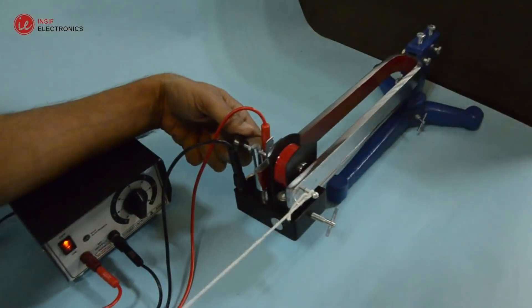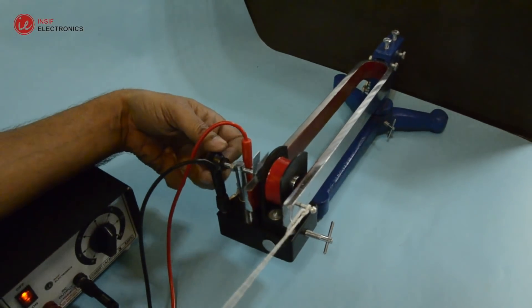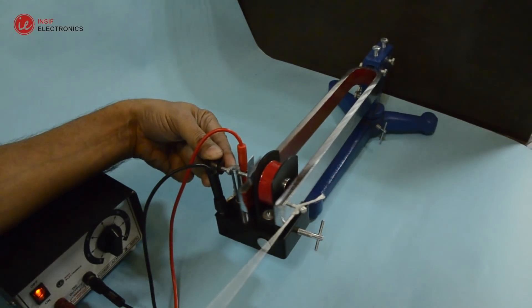Now switch on the battery eliminator and adjust the contact points so that the tuning fork is set into vibrations.